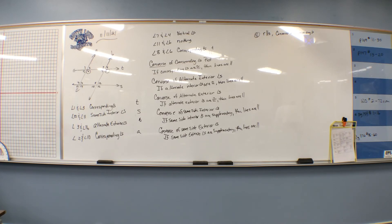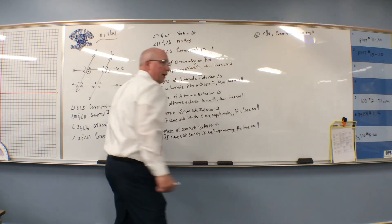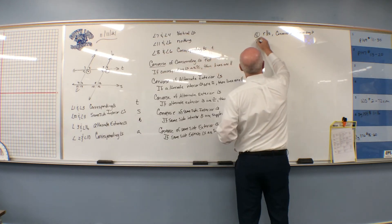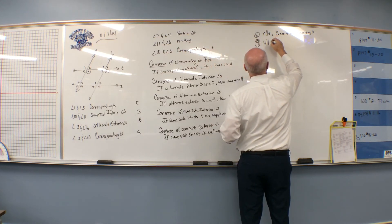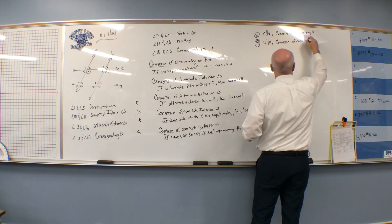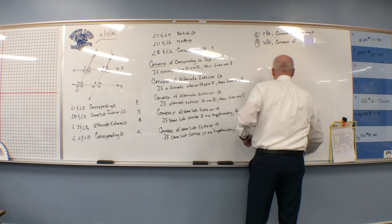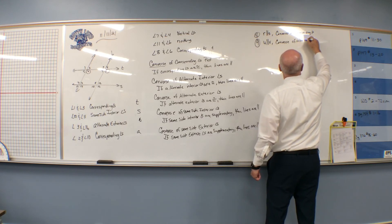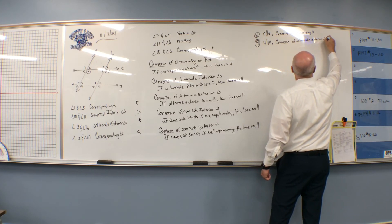Number 9: angle 2 and angle 9. Are there any lines we can prove parallel using angles 2 and 9? What kind of angles are they? They're alternate exterior. We do have a converse for alternate exterior angles, so U is parallel to B by the converse of alternate exterior angles.